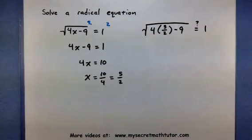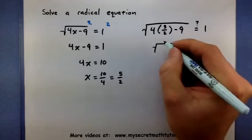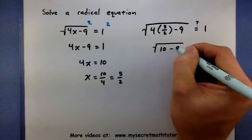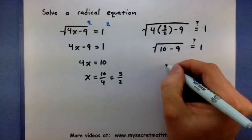All right, so let's go ahead and evaluate this. 4 times 5 is 20. 20 divided by 2. That would be a 10. 10 minus 9 is 1.